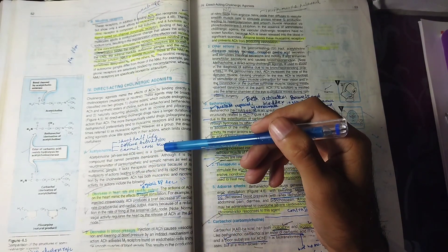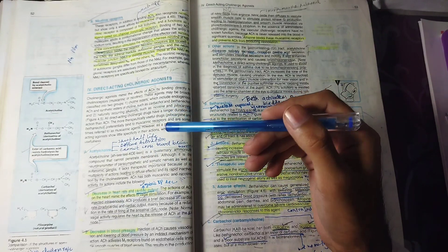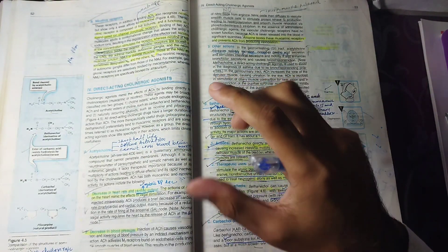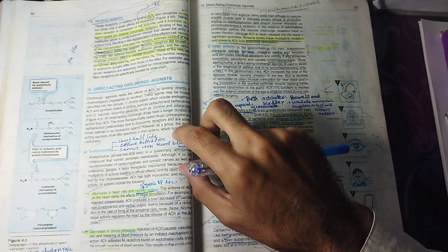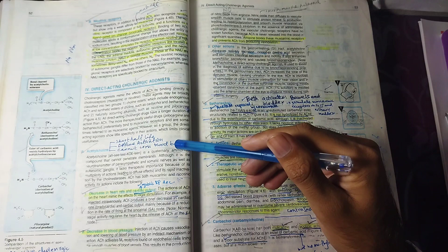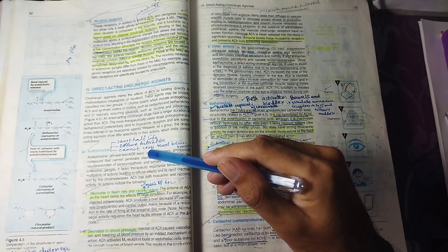Now let's talk about acetylcholine. Acetylcholine is a quaternary ammonium compound. There are two types: quaternary amine and tertiary amine. Tertiary amine has a small polar group, but quaternary amine has a larger polar group, so it cannot cross the blood-brain barrier because it is a polar compound.